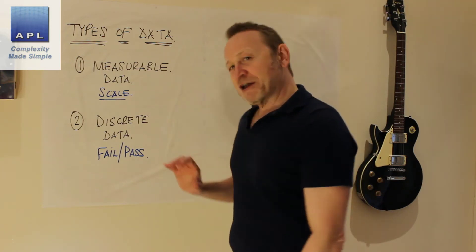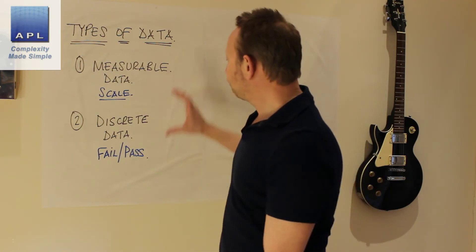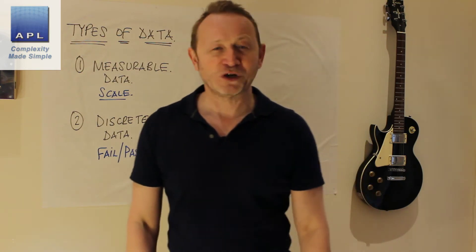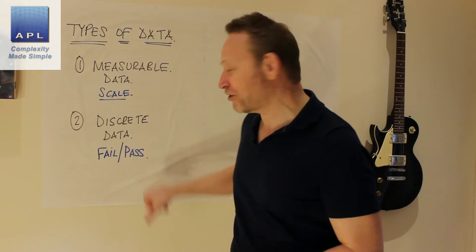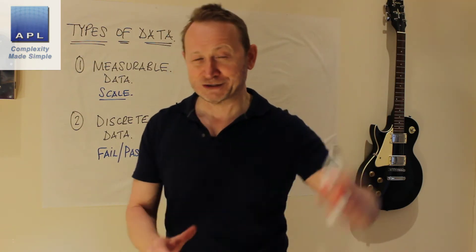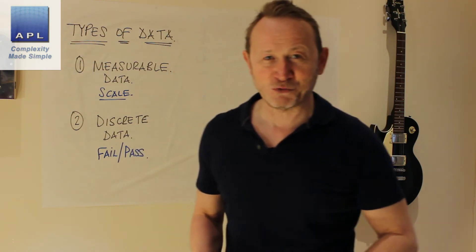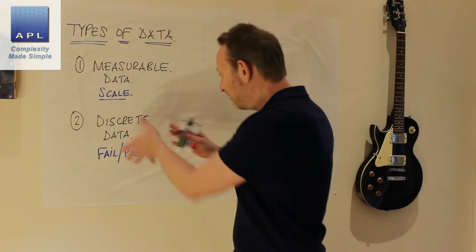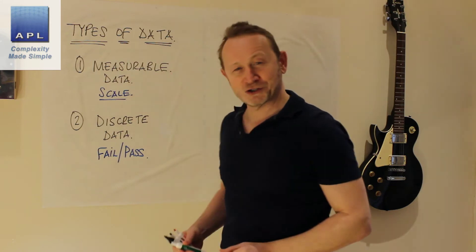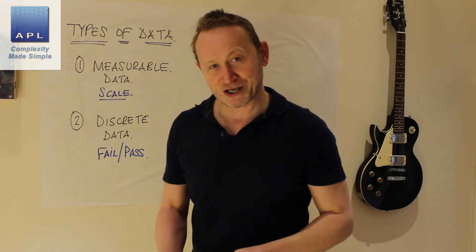But when you get a problem, which type of data should you lay your hands on? So when this starts giving me constant fail, fail, fail, and somebody puts their hand up and says we need help, when you come to the process and you've got this type of data, is this okay? Or should we go and look at measurable data instead?